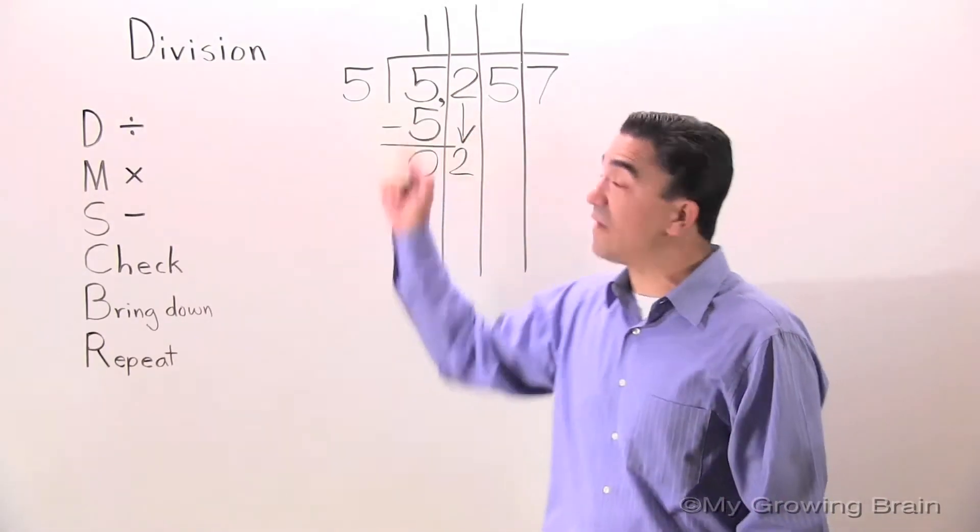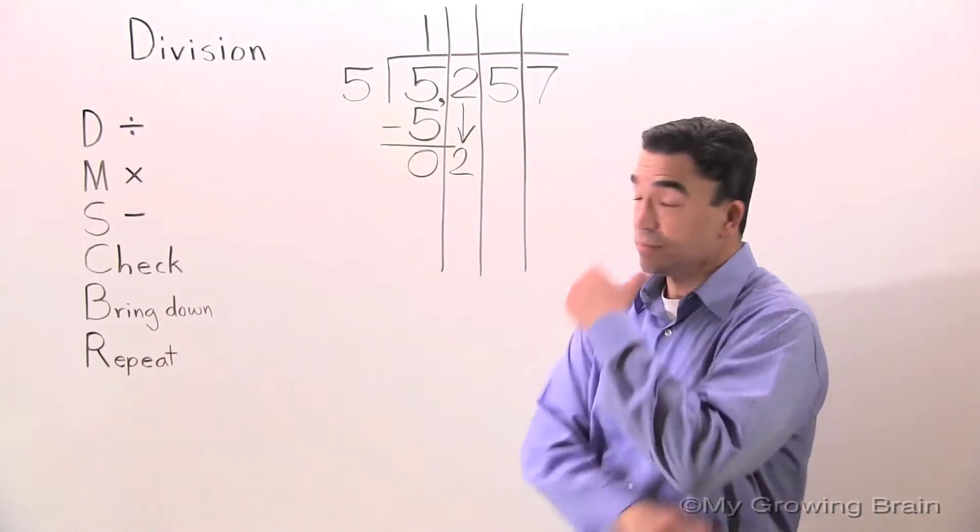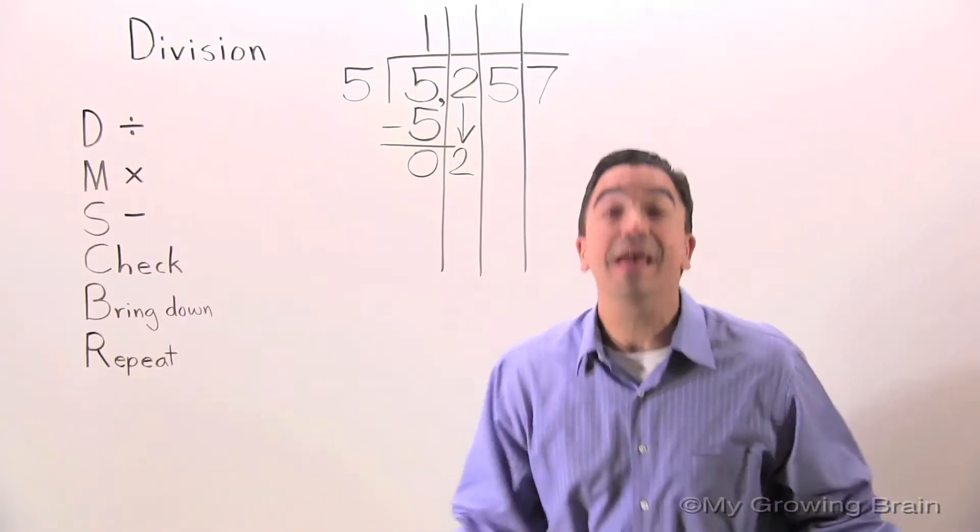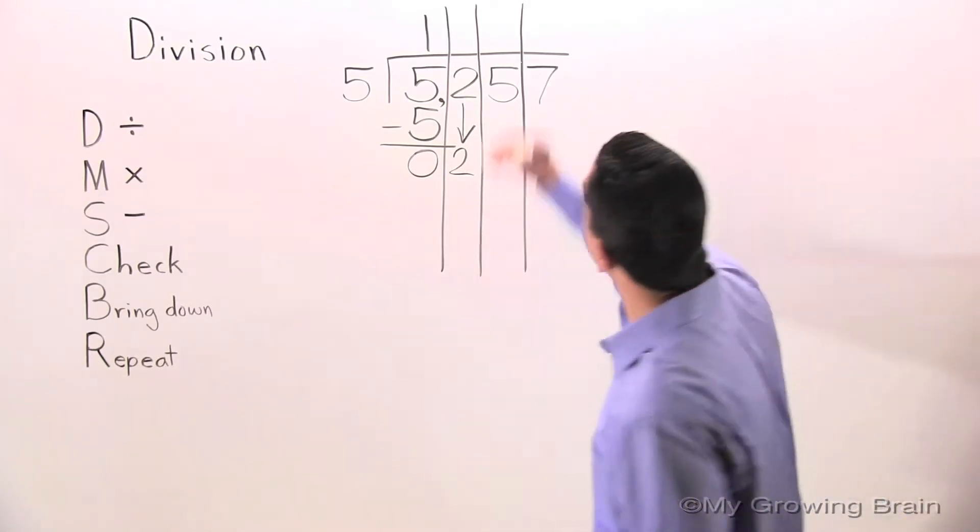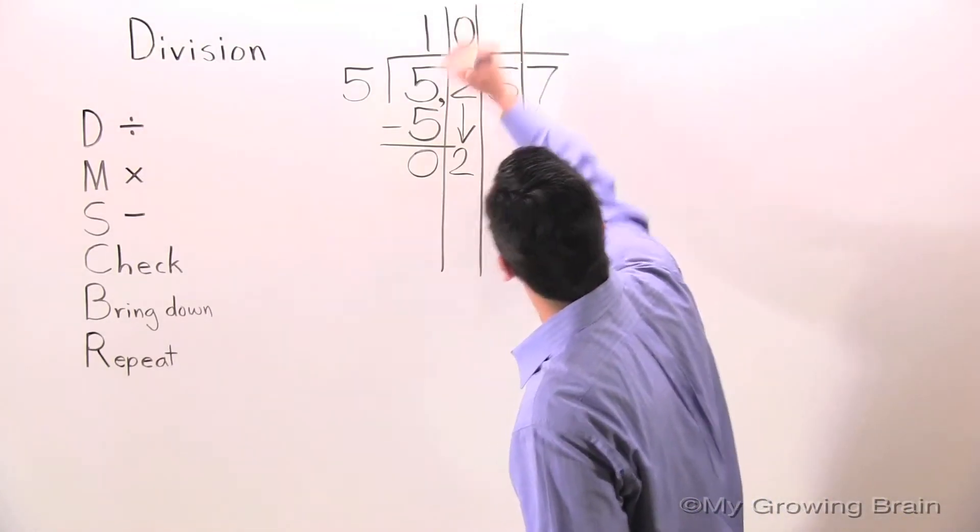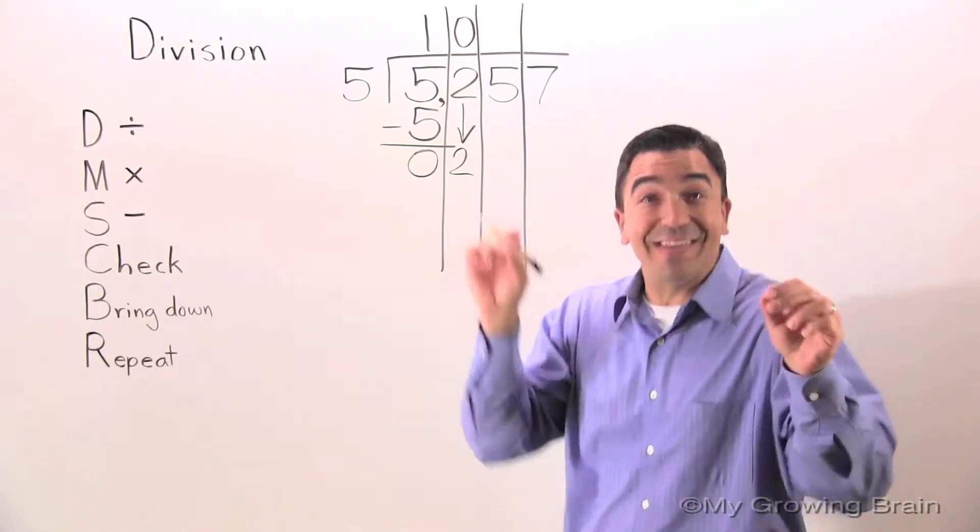Divide: 2 divided by 5, or 5 into 2. You can't do it. Use a 0. 0 in the quotient.